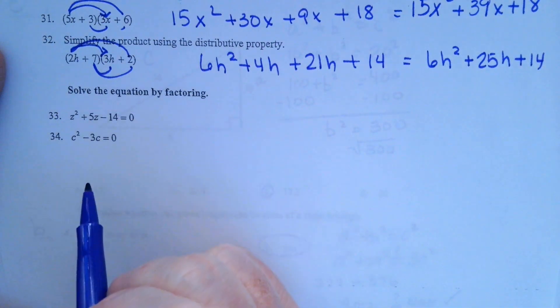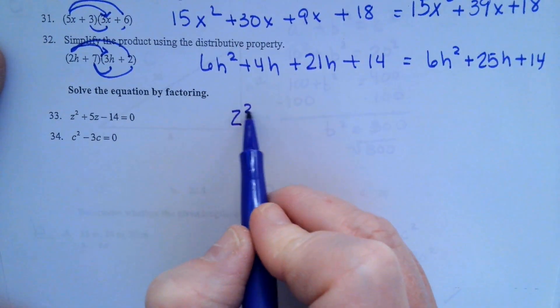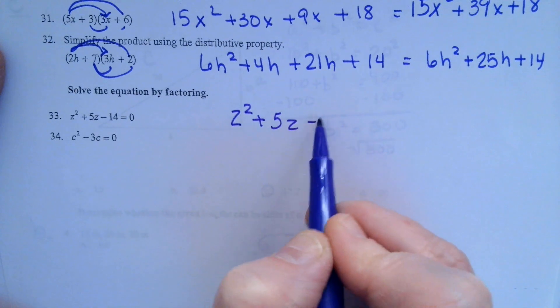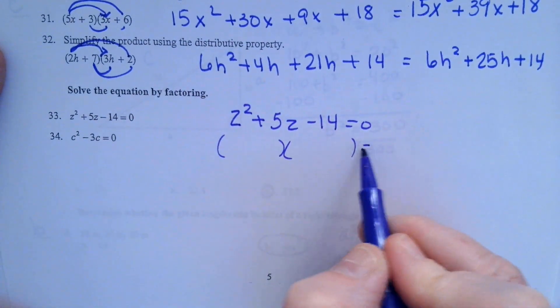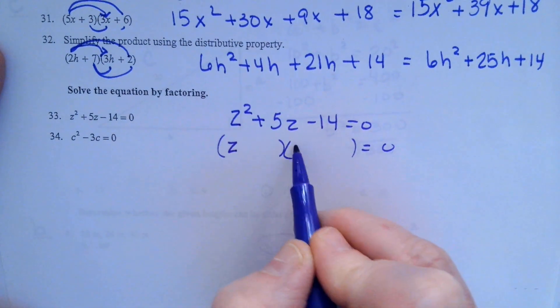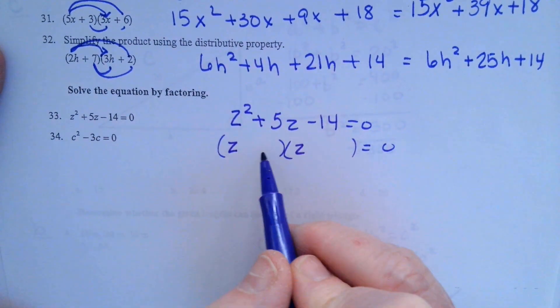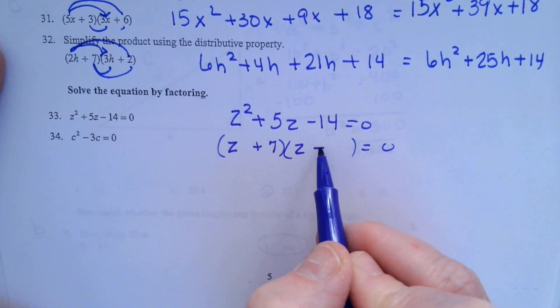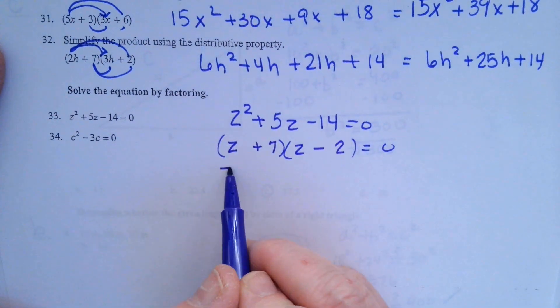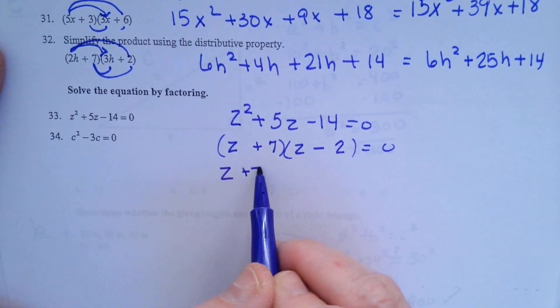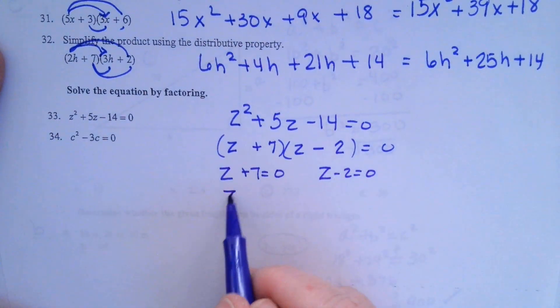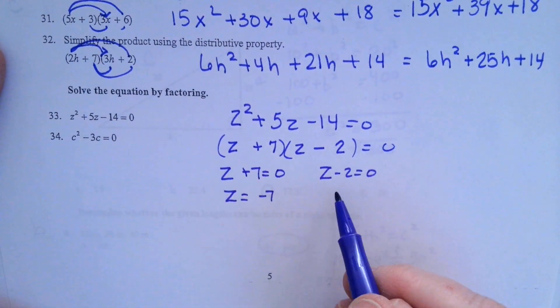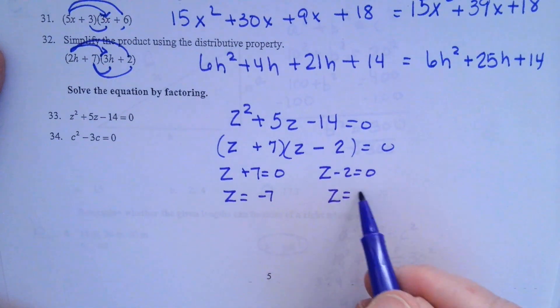Solve the equation by factoring the first one. Z squared plus 5z minus 14 equals 0. We're going to factor that into two binomials. Z and z. Factors of 14 are going to be 7 and 2. Going to set those equal to 0. Z plus 7 could be 0, or z minus 2 could be 0. In the first case, z could be negative 7. In the second case, z could be 2.